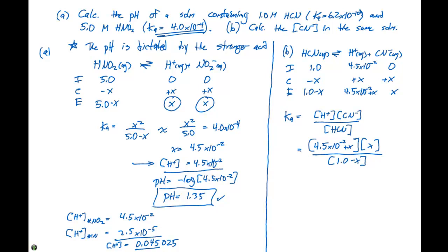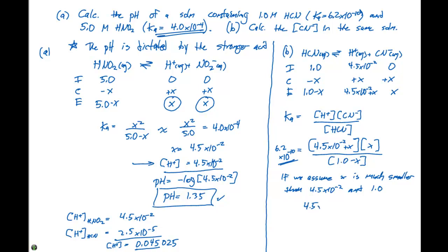If we assume x is much smaller than 4.5 times 10 to the minus 2 and much smaller than 1.0, we can simplify. With Ka equal to 6.2 times 10 to the minus 10, the expression becomes 4.5 times 10 to the minus 2 times x divided by 1.0, set equal to 6.2 times 10 to the minus 10. Solving, x equals 6.2 times 10 to the minus 10 divided by 4.5 times 10 to the minus 2, giving x equal to 1.4 times 10 to the minus 8.